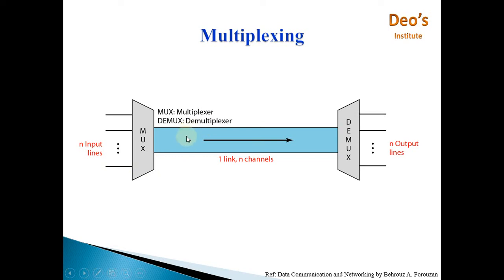The bandwidth of this link should be greater than 12 kHz. In that case only, you can merge these signals into a single signal and transmit it through this channel. At the receiver end, a demultiplexer will segregate these signals one from another. All signals will be separated and given to a particular host or a particular application at the receiver end.